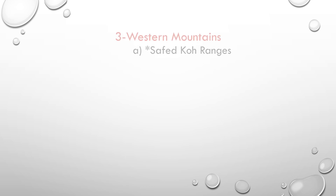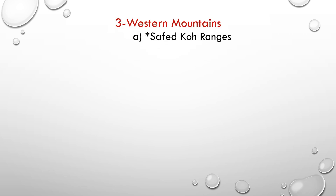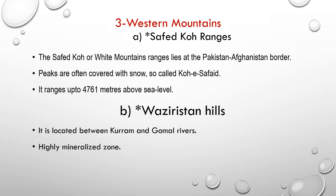Now we move to the third: western mountains. In the western mountains, first we will discuss the Safed Koh ranges. Safed Koh, or 'White Mountain' ranges, lies at the Pakistan-Afghanistan border. They are called Safed Koh meaning 'white' because these mountains are often covered with snow, and they range up to 4,761 meters above sea level.